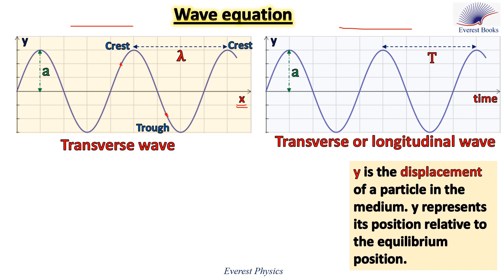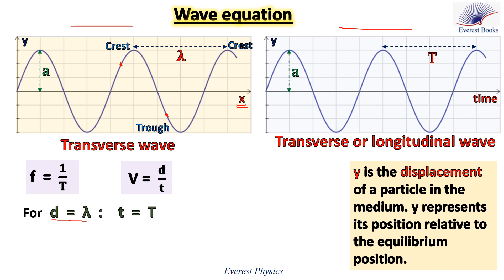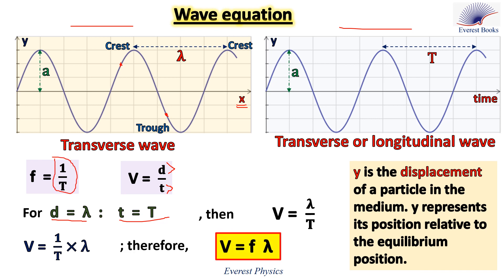Now let's derive the wave equation. In the previous episode, we discussed the equations relating frequency and period, and the speed of the wave. When the wave travels one wavelength, it takes a time of one period. So, replacing d by lambda and t by the period, you get v equals lambda over T. This is v equals (1/T) times lambda, and since 1/T equals f, then v equals f times lambda. This is the wave equation.